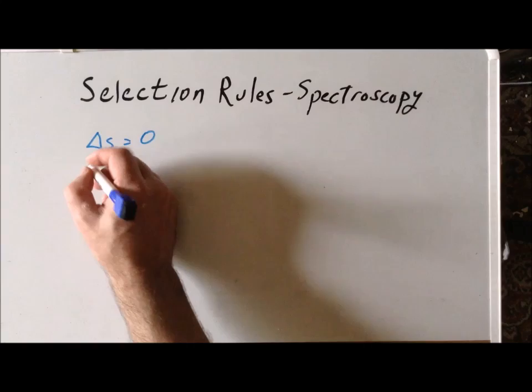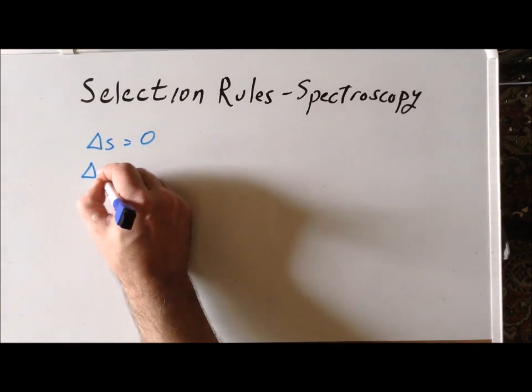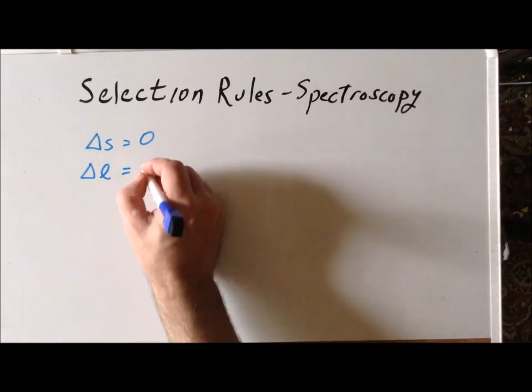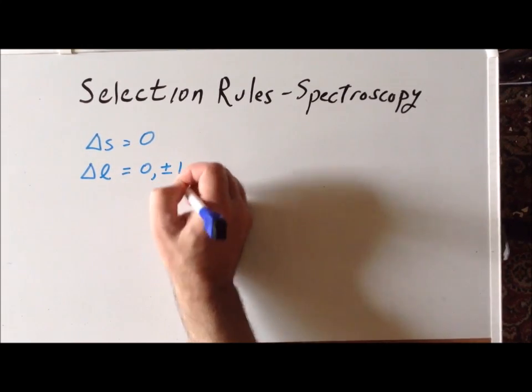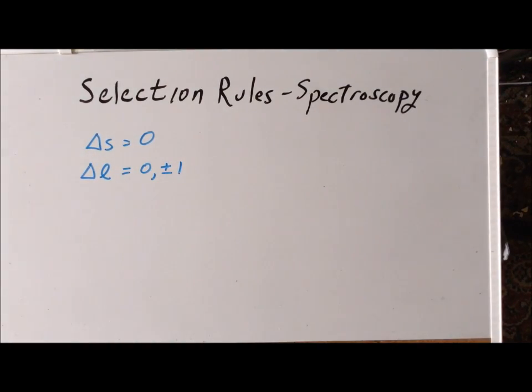The second rule involves the orbital angular momentum ΔL. So this can change by either zero or a value of plus or minus one. The reason for the plus or minus one is as follows. When we absorb a photon, the photon has a spin angular momentum of plus one. The spin angular momentum of an electron is plus or minus one half.